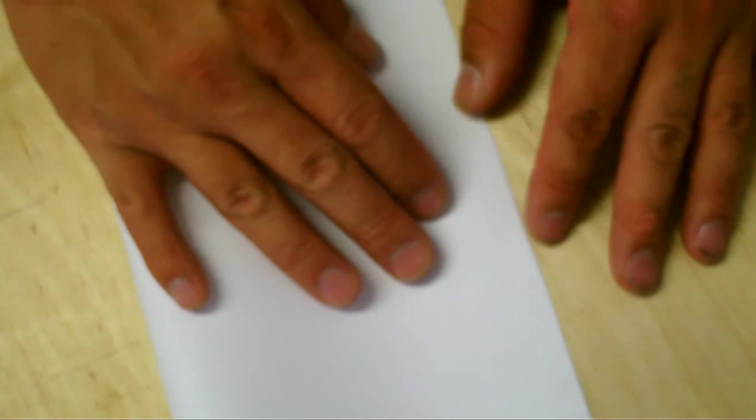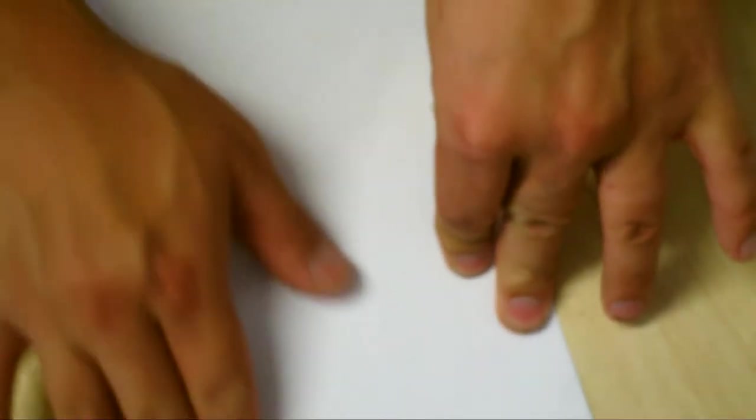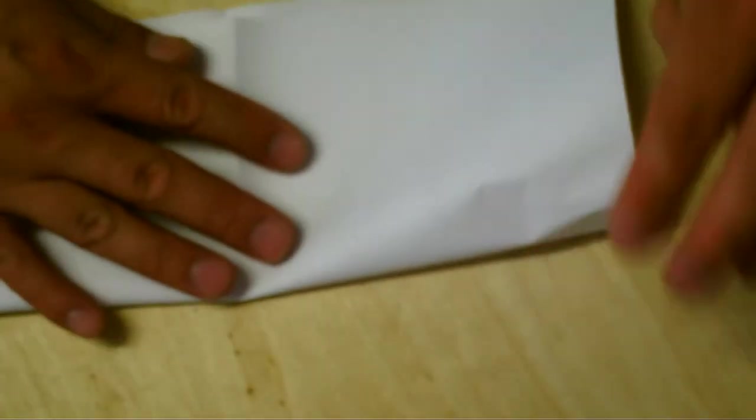Okay, so in order to find your angle to cut your segments out for the drum, you're just going to go ahead and fold this in half, fold it in half again.